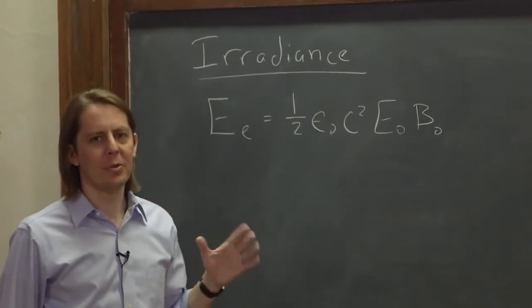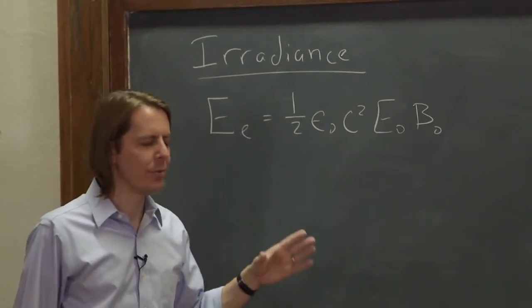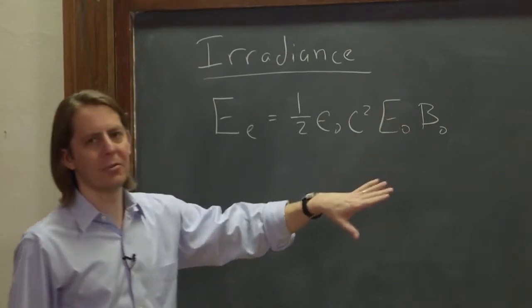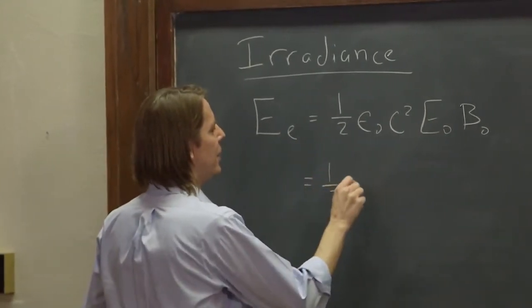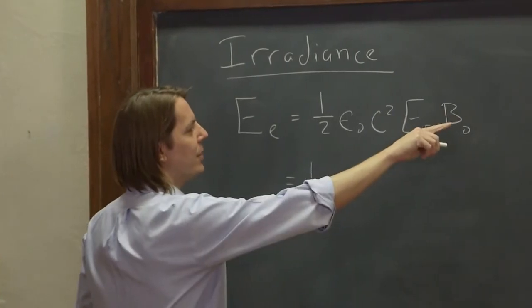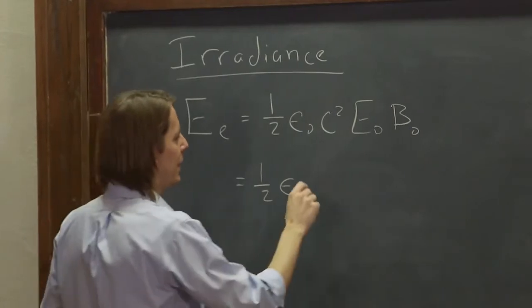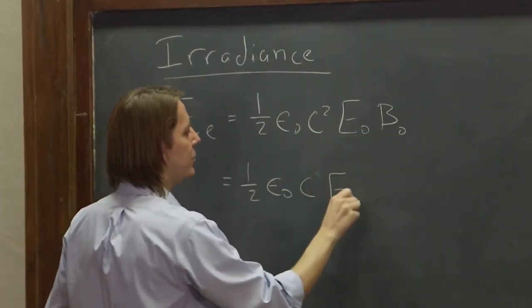Usually in optics, we just think about the electric field, because the electric field interacts more strongly with matter. So we usually like to do everything in terms of the electric field and not have to keep up with the magnetic field. So we can make that one-half epsilon-naught, and just convert that B-naught into an E-naught over c, if we're just talking about amplitudes. And it becomes c-naught-squared, one of them canceled, E-naught-squared.